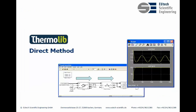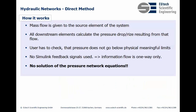First, the direct method — how does it work? In the direct method you give the mass flow in the source element of the system, defining the mass flow and forcing it through your network. All downstream elements then calculate only the pressure drop or pressure rise resulting from the given flow. It is up to the user to check that the pressure does not go below physical and meaningful limits. There are no feedback signals used in Simulink — it is purely forward, left to right. We are not solving the pressure network equations in this method; we are more or less ignoring them.